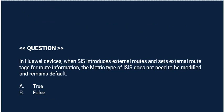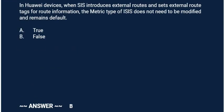Next question: In a Huawei device, when ISIS introduces external routes and sets external route tags for route information, the metric type of ISIS does not need to be modified and remains default. True or false? Correct answer is Option B: False.